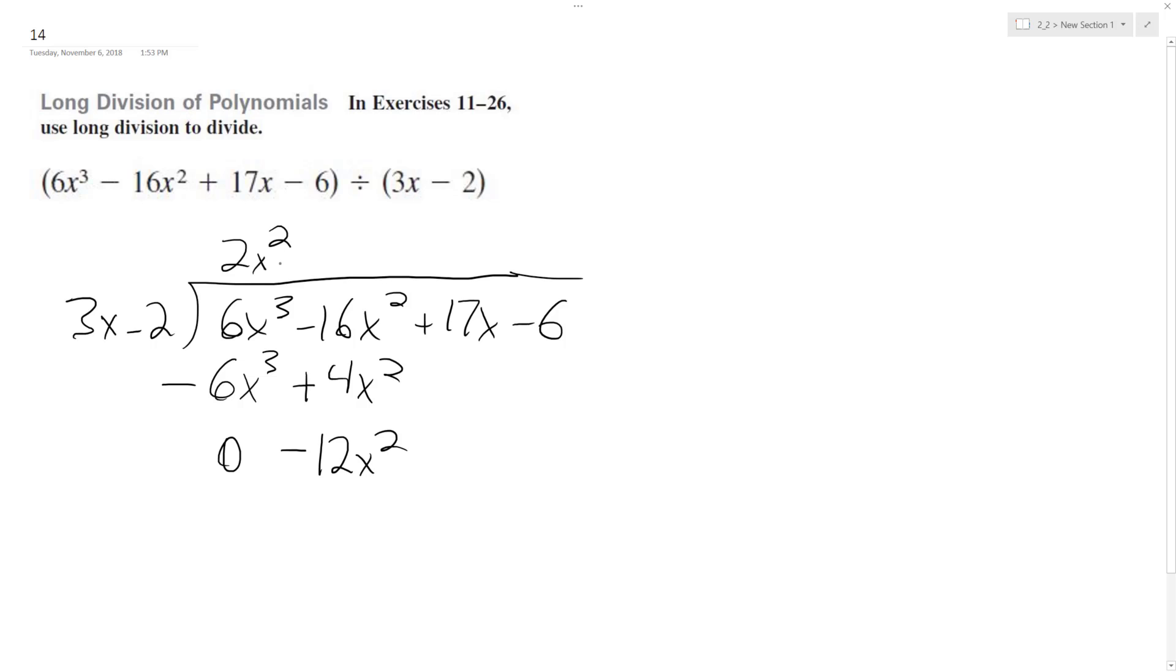How many times does 3x go into negative 12x²? It goes into it minus 4x times, so minus 12x² plus 8x. Switch the signs.